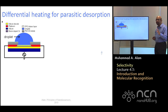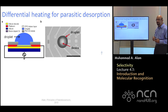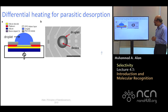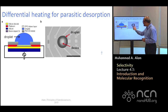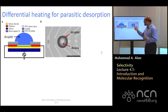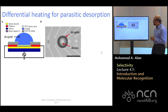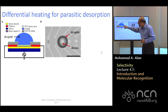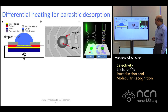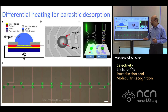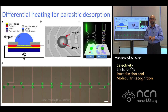Once binding is complete, you need to control the surface temperature very precisely to melt away everything that is not properly bound — any parasitic binding that occurred. One particularly nice way to do this is to place the sample on a transistor and use it as a heater underneath, precisely controlling the temperature of the droplet by pushing current through it. Any incorrectly bound molecules are dissolved and washed away, leaving behind only the correctly bound pairs, significantly improving selectivity.